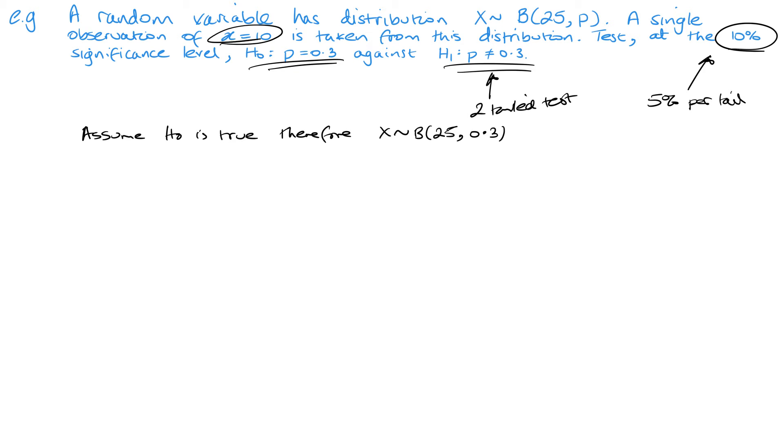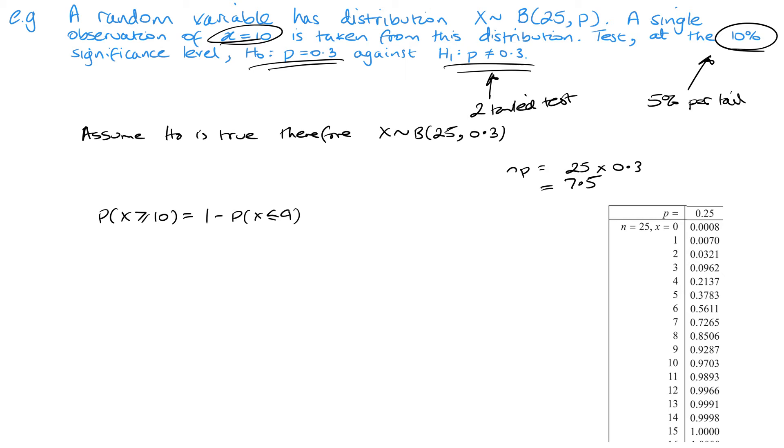Our observed value is 10. If you're not sure which tail to check, work out your np, your expected outcome: 25 × 0.3 = 7.5. 10 is bigger than that, so we would be testing the upper tail. So what I'm going to test is P(X ≥ 10), which actually means 1 - P(X ≤ 9). Here you can see the value for 9, so we've got 1 - 0.9287.